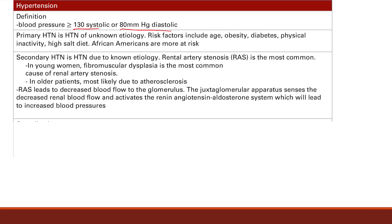The second type of hypertension is secondary — hypertension due to a known etiology. We say this hypertension is secondary to whatever is causing it, such as renal artery stenosis. The most common etiology for secondary hypertension is renal artery stenosis.